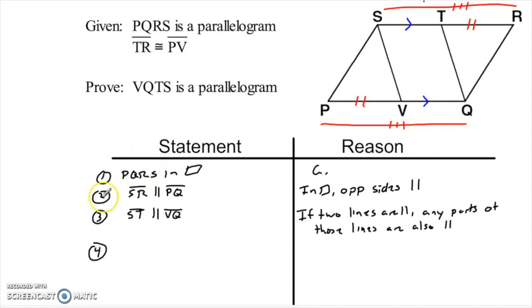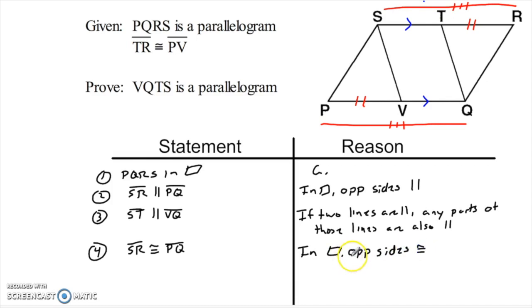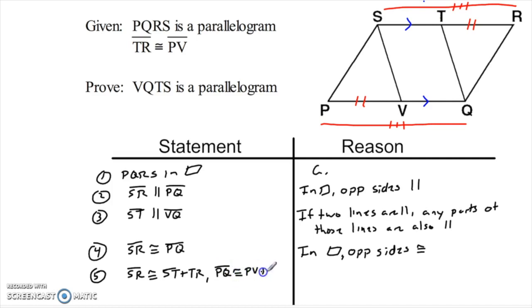Using the original parallelogram, the opposite sides are congruent, and then taking away the other given will give me the pair of sides I need congruent. The first thing I need is to establish those large pieces: SR is congruent to PQ — because in a parallelogram, opposite sides are congruent. Then I'll break them up: SR equals ST plus TR, and PQ equals PV plus VQ. That is a partition step.